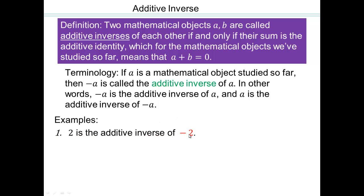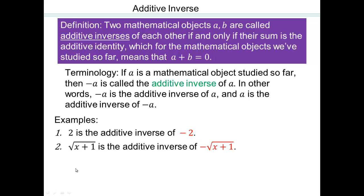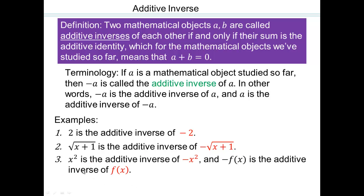So 2 is additive inverse of negative 2, because 2 plus negative 2 is 0. Similarly, square root of (x+1) and negative square root of (x+1) give you 0. x squared and negative x squared are additive inverses of each other. Negative f(x) and f(x) are additive inverses of each other. Here are a few examples of what additive inverse is.